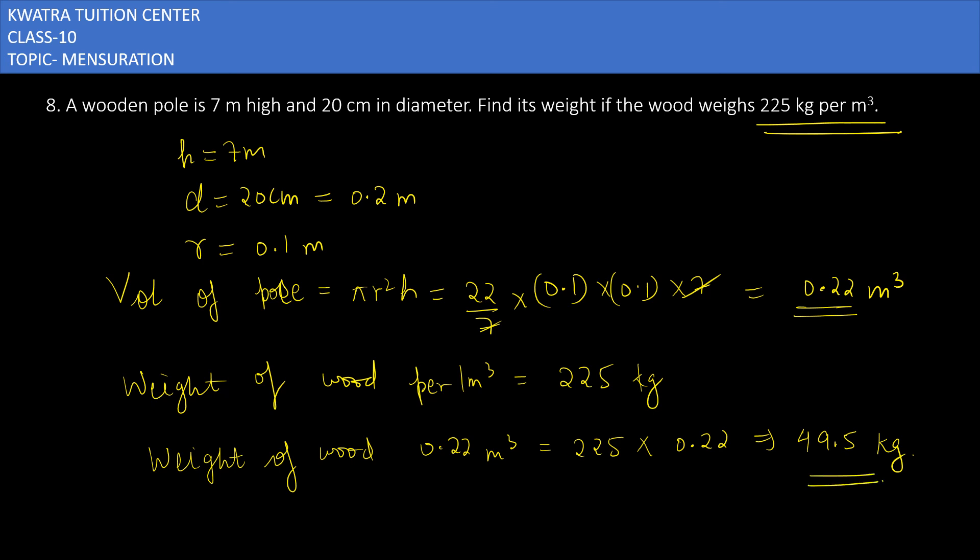Weight of wood is how much? 49.5 kg. So yes, this is the answer for the 8th one.